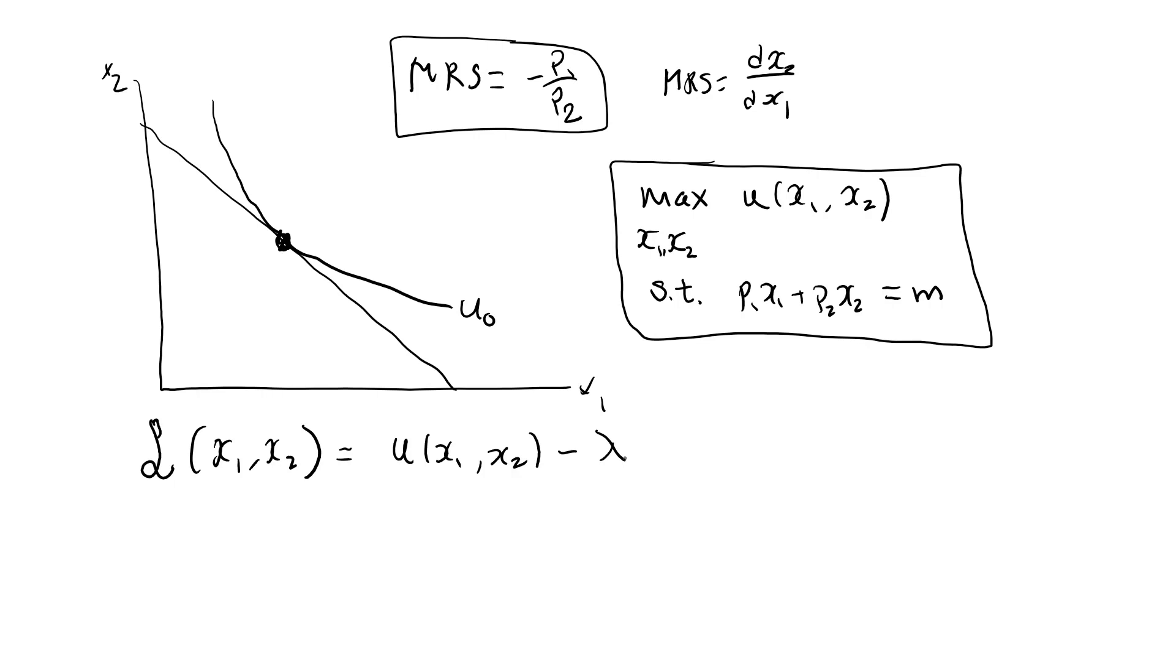We do a lambda, which is the Lagrangian multiplier. We do a parenthesis. And in the parenthesis, we put the left-hand side of the constraint p1 x1 plus p2 x2 minus, and then we do the right-hand side. So this is the Lagrangian for our constrained optimization problem.